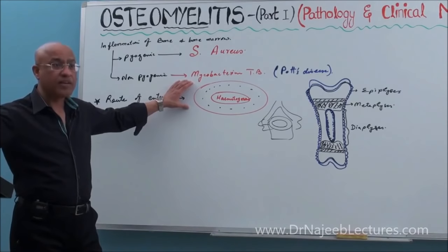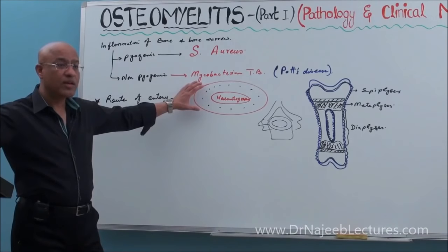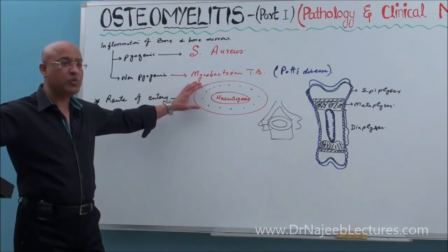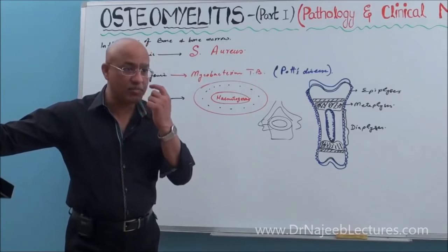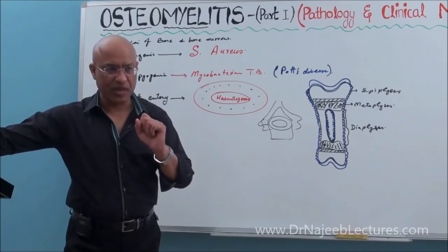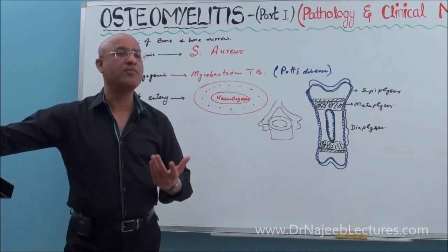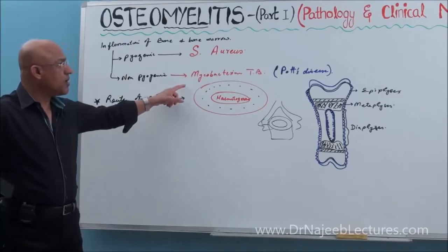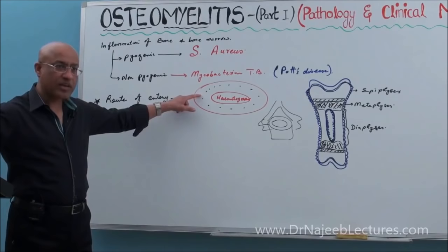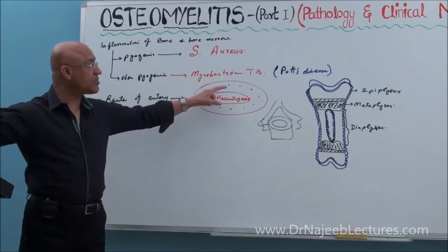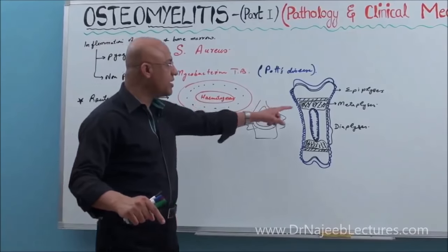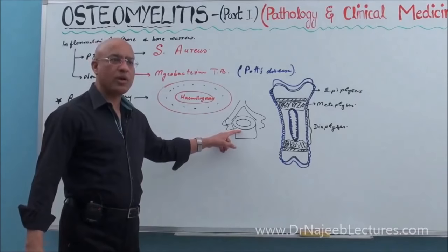Bacteremia — bacteria moving in the blood without proliferating — can arise from any focus of infection, even minor mucosal breaches from hard defecation, chewing hard food, or damage to gum or buccal mucosa. Normally the reticuloendothelial system phagocytoses and eliminates these bacteria. But if bacteria survive in the blood, they love to settle in certain areas: in growing children they settle in the metaphysis, and in adults they settle in the vertebral bodies.